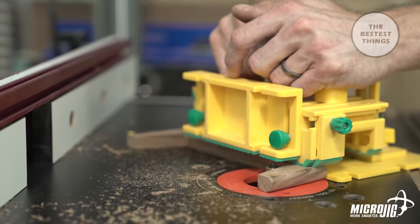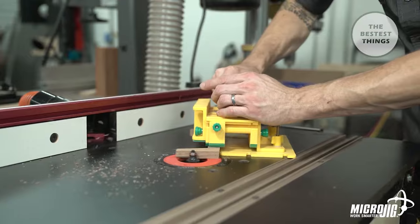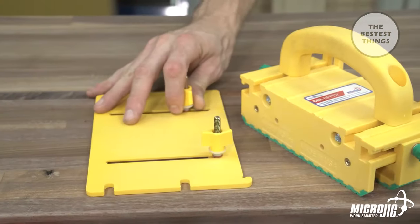Use it on the router table to protect your hands from exposed bits, or for better control when freehand routing. Next up we have the stabilizing plate.